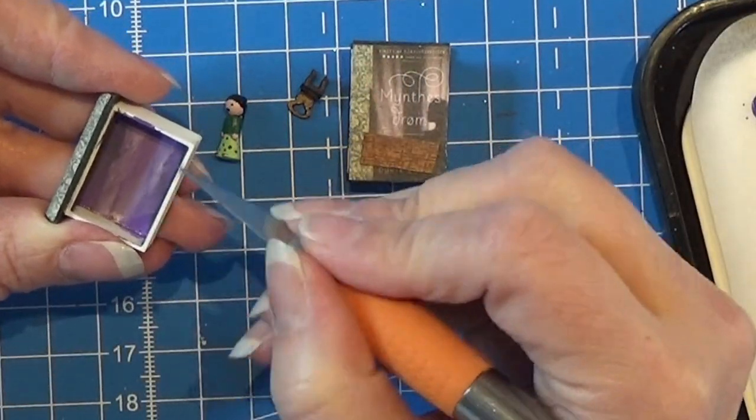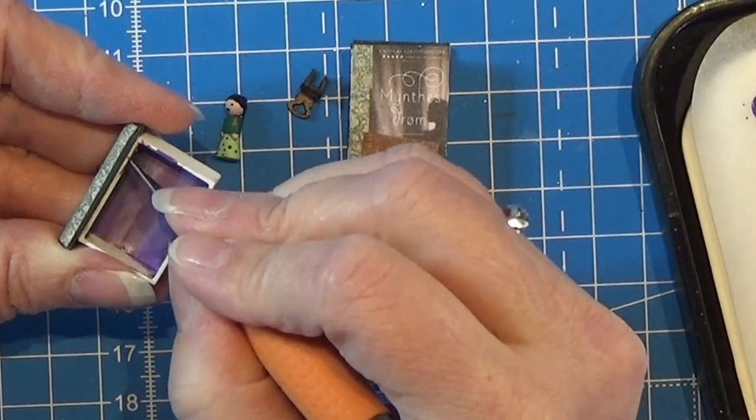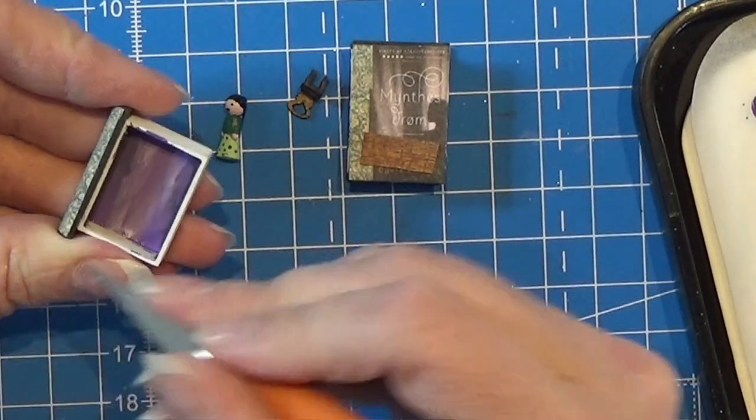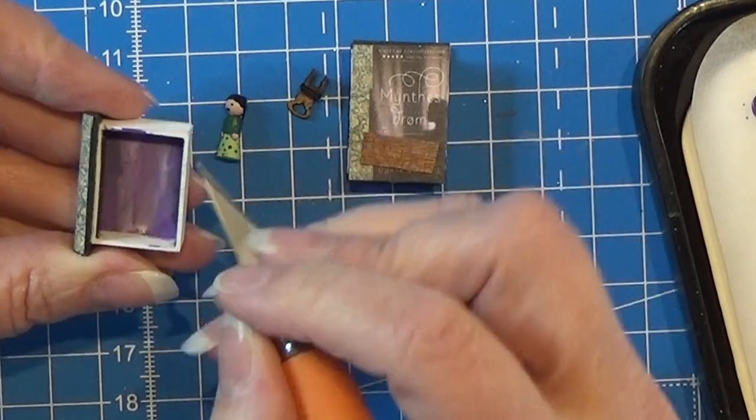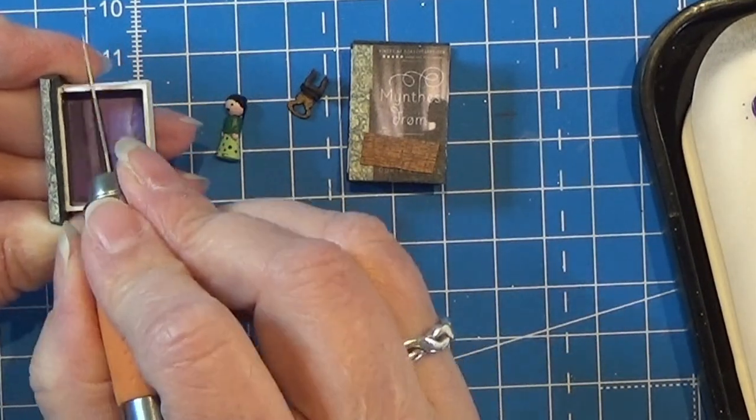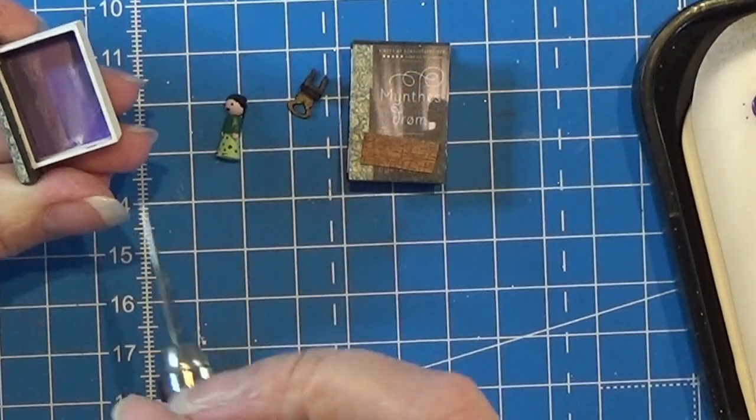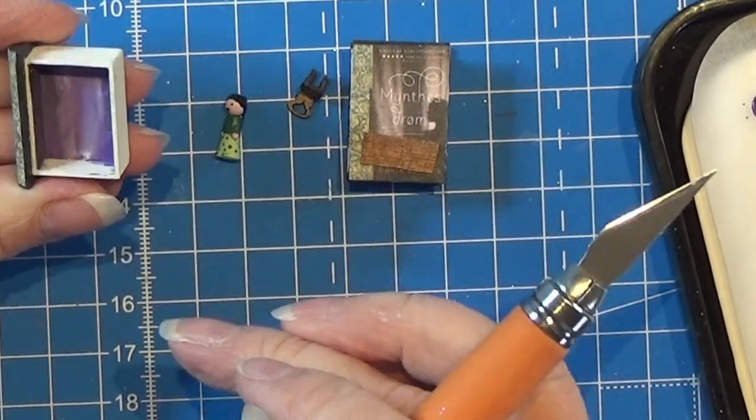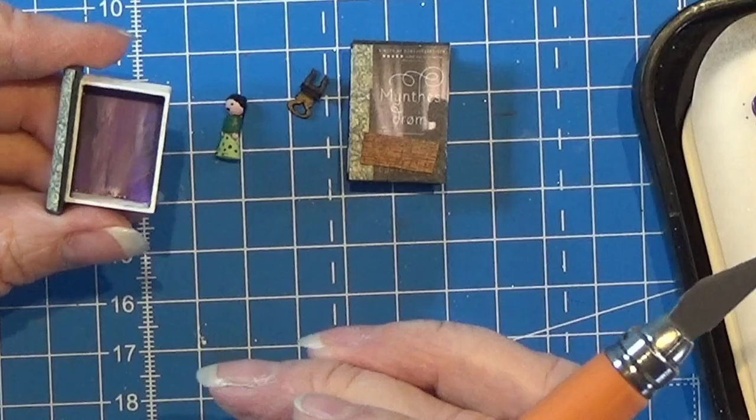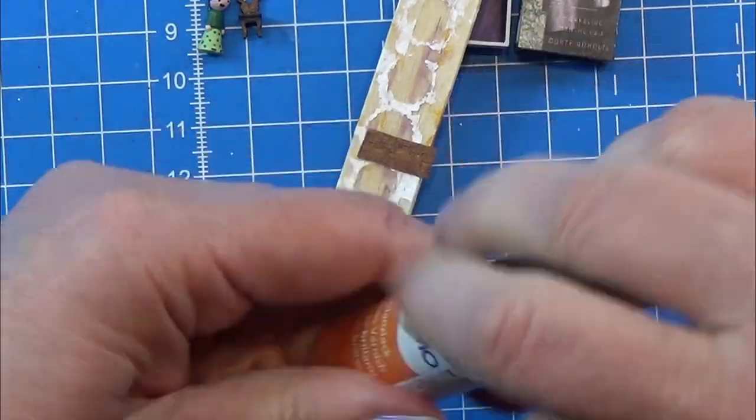I left this to dry and then I took my X-Acto knife and scratched off any paint that I got on the edges here around the little book. Because I don't want those on there. I did the same on the paper sides of the cover. Just scratching off if I got a bit too much paint on there.